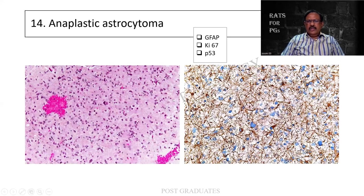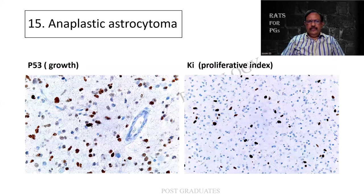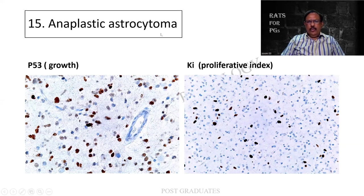This is a use of the monoclonal antibody in an anaplastic astrocytoma. There is a tumor over here and the usage of the antibody: GFAP - glial fibrillary acidic protein - or the p53, which is to denote the growth factor, key for the proliferation index. These are the various antibodies which can be used for an anaplastic astrocytoma.